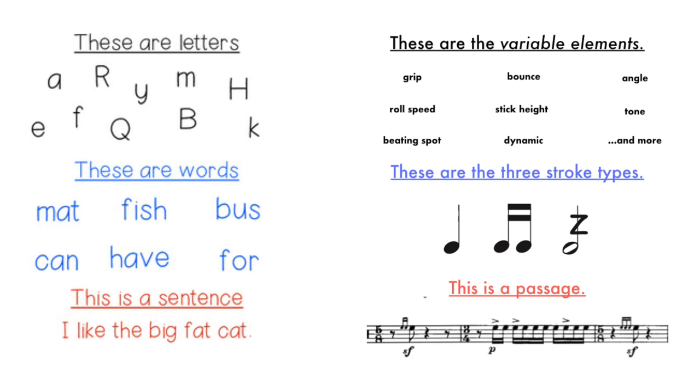And the only way you do that is by working on those variable elements as your language of snare drumming. Those are the letters that make up the words that make up the sentences. When you work on rudiments, you're always working on sentences. You're not working on the letters or the words of your language. You're just working on the full passages. I want to show you how to do this. I want to show you how amazing it can be if you can work on this thing, which is more elemental and more detailed than the rudiment. If you just work on those things, you're holding yourself back from making improvement on your instrument.